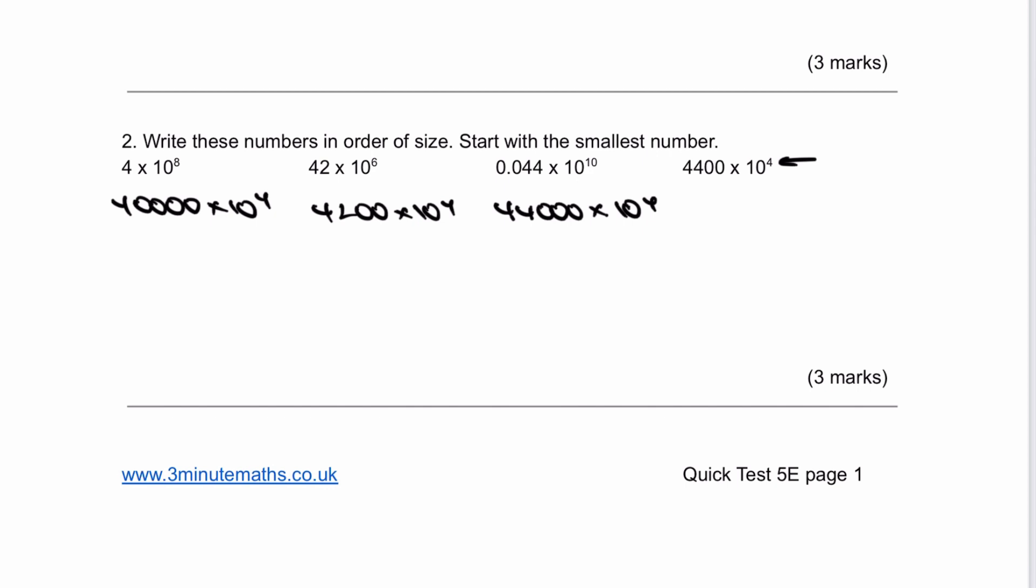The final one is 4400 times 10 to the 4. With that, I can see my smallest number is 4,200. My next biggest is 4,400, then 40,000, and finally 44,000. With these types of questions, they ask you to go back to the original question format: 42 times 10 to the 6, which is the smallest, 4400 times 10 to the 4, which is next, 4 times 10 to the 8, which is third, and then 0.044 times 10 to the 10, which is the largest. There are some additional standard form questions on 3-Minute Maths. Please visit and have a look.